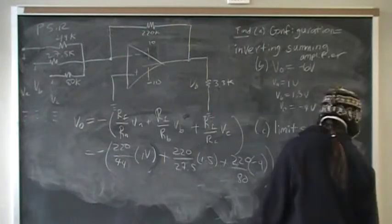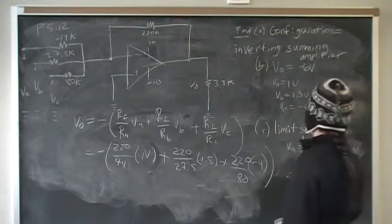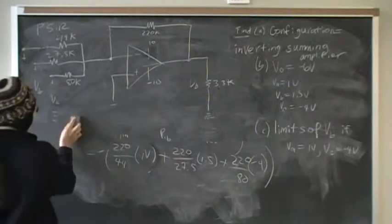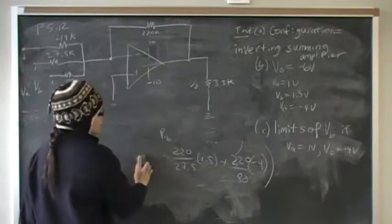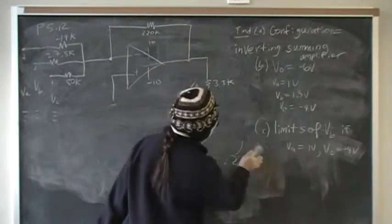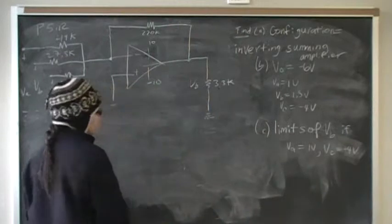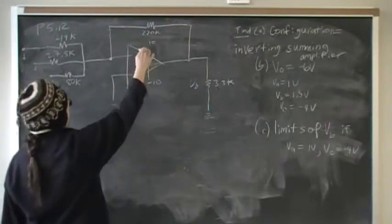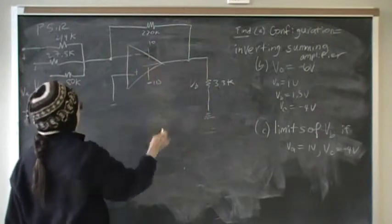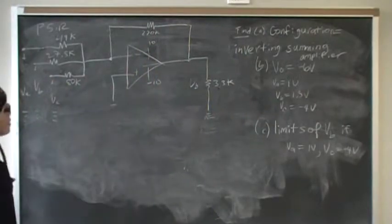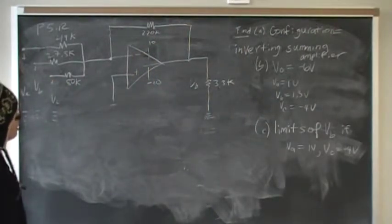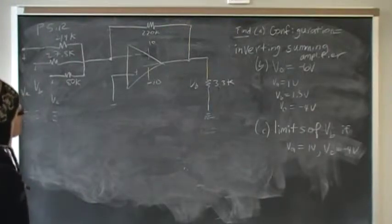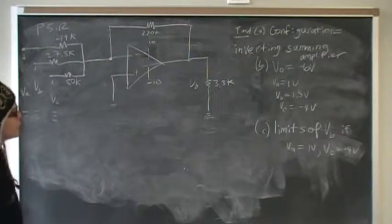Now we're going to allow Vb to vary while fixing Va and Vc, and we want to know the limits of saturation. Vout is constrained by the Vcc, the power supply. It can't exceed 10 volts, and it can't be below negative 10 volts. Those will be the points of saturation.